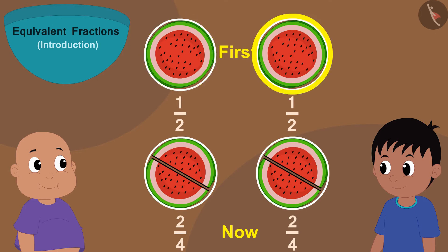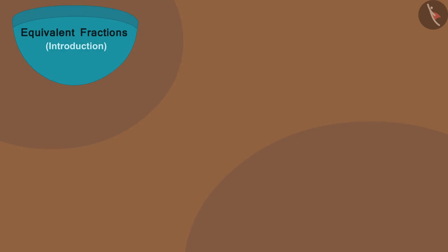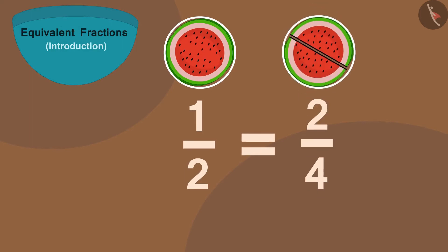Here, this one part is equal to these two small parts. And because the amount of watermelon they are getting is still the same, we can write that the fraction one by two is equal to the fraction two by four.